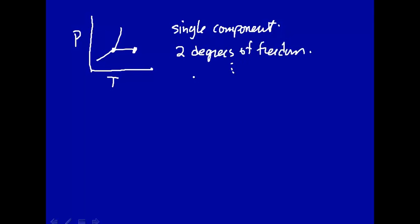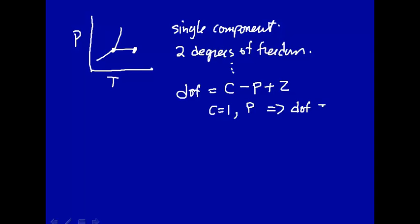And we generalized this to the Gibbs phase rule, where the degrees of freedom is equal to the number of components minus the number of phases that you want to be in phase equilibrium, plus two. For a single component, C equals one, and you want any phase — it doesn't have to be any phase equilibria — this implies that your degrees of freedom equals two. The two degrees of freedom are temperature and pressure; once we specify those, we know what the phase is. So phase equals one.